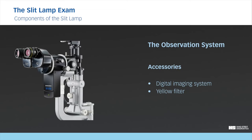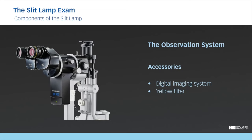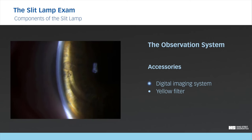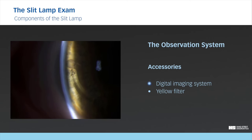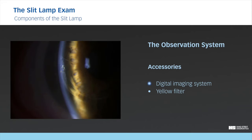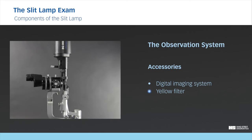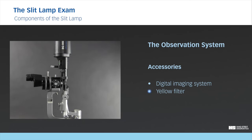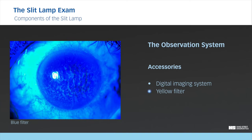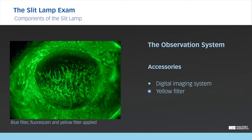Most modern slit lamps today offer the ability to integrate a digital imaging system. Digital imaging systems allow image capture of the view through the microscope, which is beneficial for documentation, teaching, and patient education. The yellow filter is an option that can be used in combination with the blue filter of the illumination system. It can be mounted permanently on the slit lamp and is easily engaged or disengaged as required. This filter combination improves the contrast when fluorescein is used by blocking the reflected blue light.